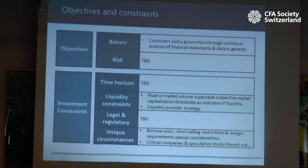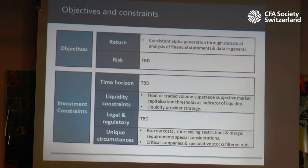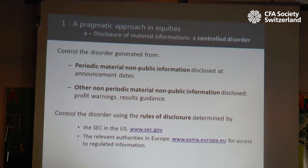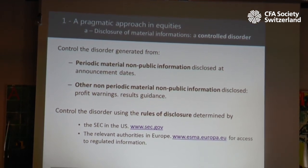For liquidity constraints, I'm better off looking at the float or the trading volume rather than the market capitalization, and I am looking for a liquidity provider strategy rather than a trend-following strategy. For unique circumstances, we should pay attention to borrow costs and account margin requirements, and should also avoid critical firms and speculative stocks. I entitled the first subsection 'A Controlled Disorder' for all the reasons mentioned so far, and I will try to bring some measure of control to this disorder and eventually lay out the steps towards a systematic investment solution.